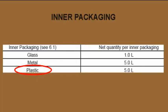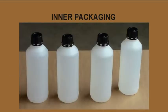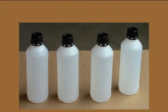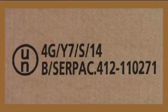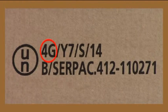Plastic inner packaging are allowed for a maximum of 5 liters each, so we can use our 4 plastic cans containing 1 liter each. As outer package, we can use a fiberboard box. The code 4G means that it must be a UN specification packaging, so we select this UN 4G package.